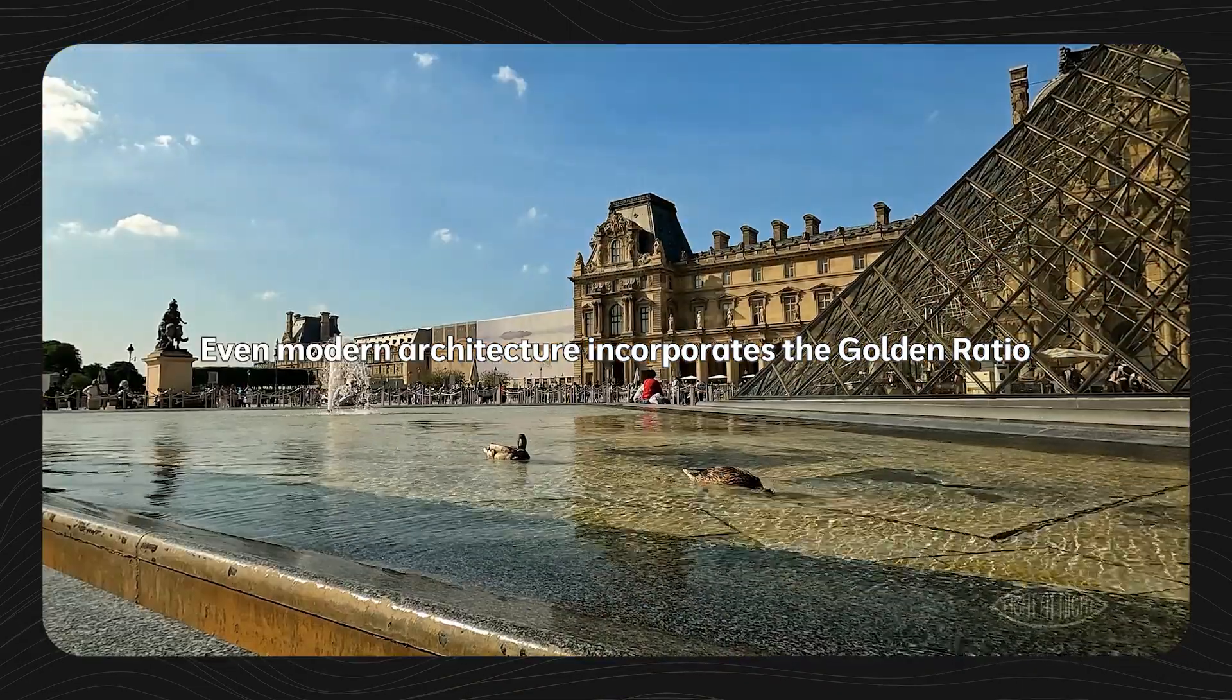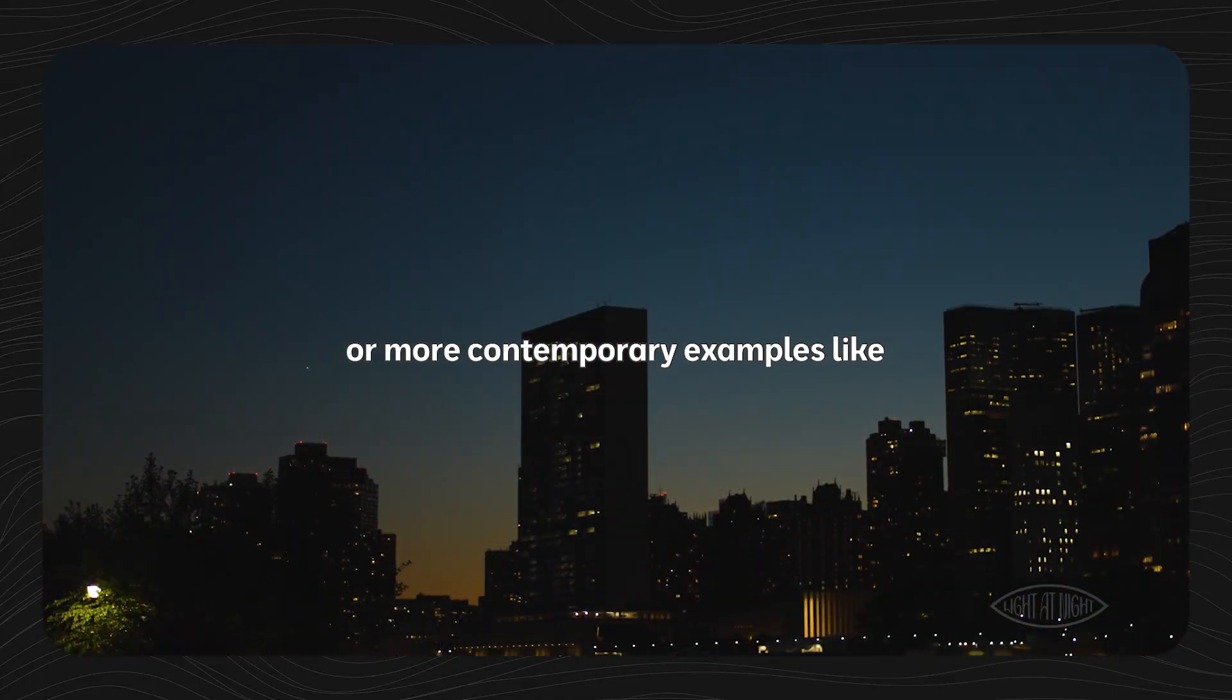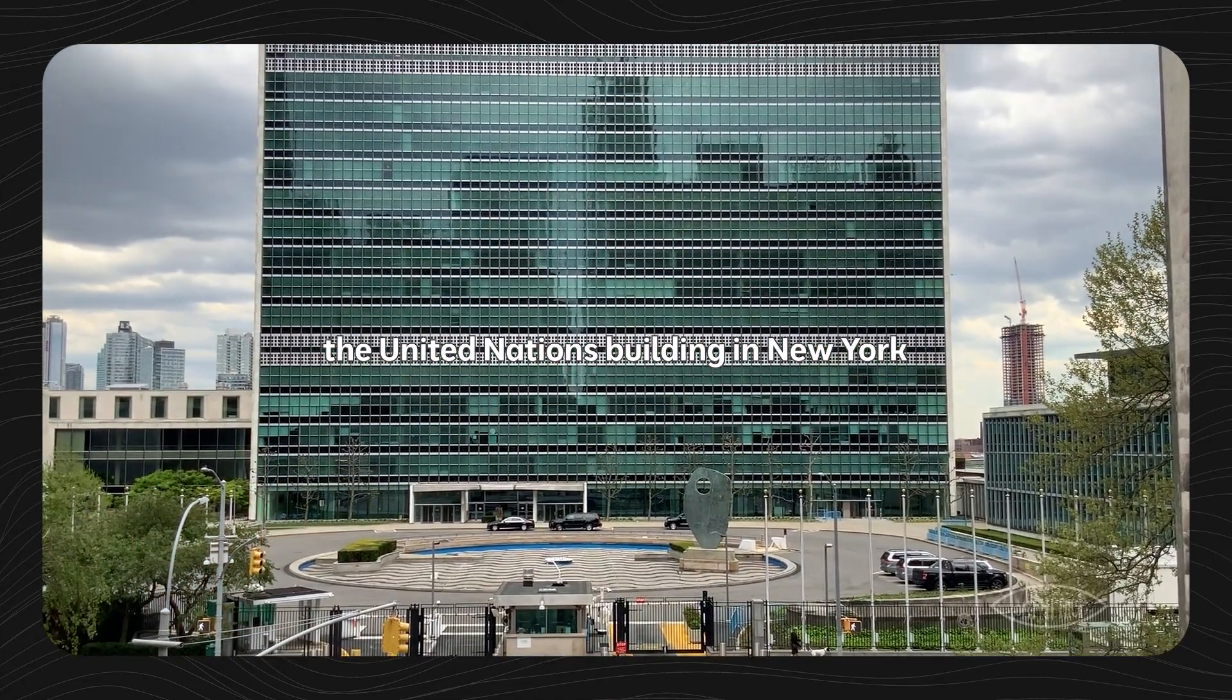Even modern architecture incorporates the golden ratio. Look at the pyramids of Egypt, or more contemporary examples like the United Nations building in New York.